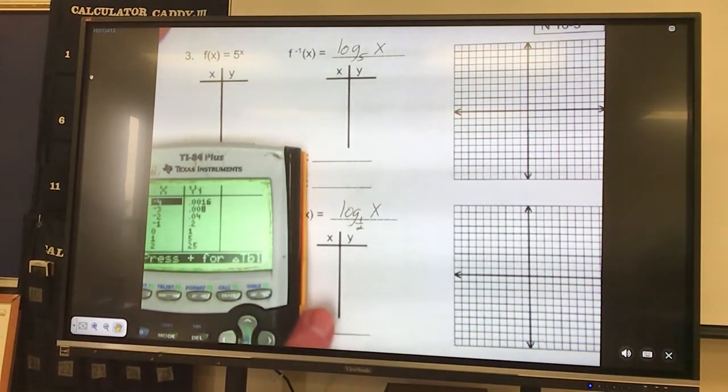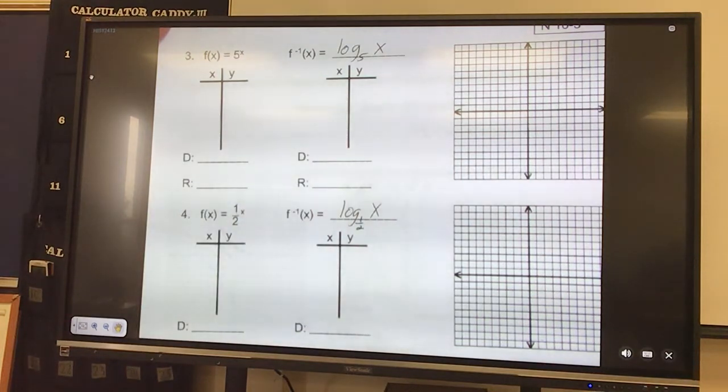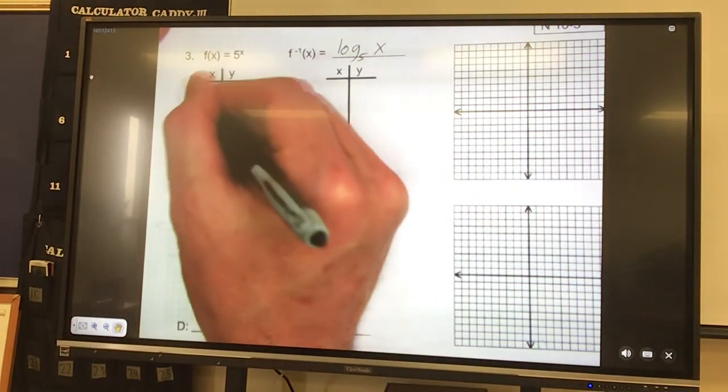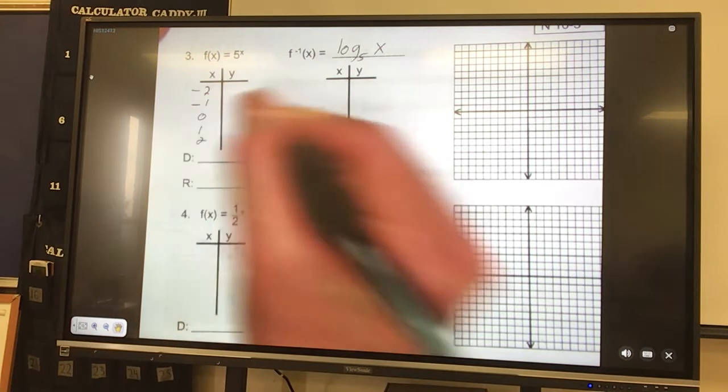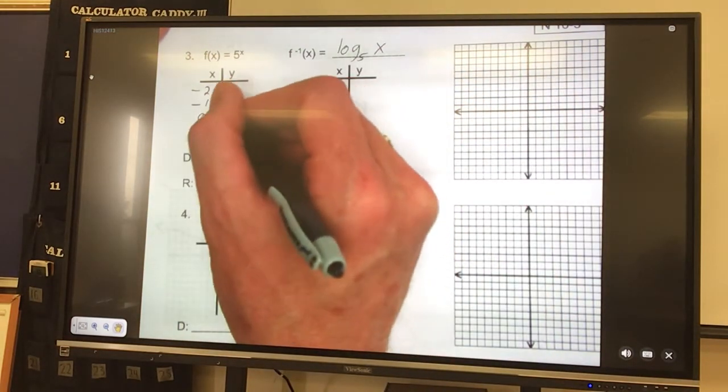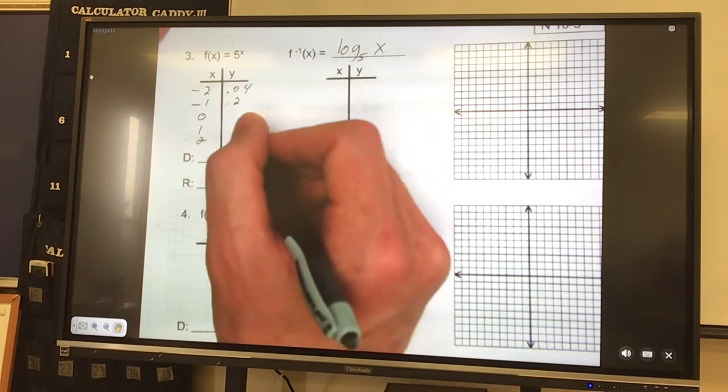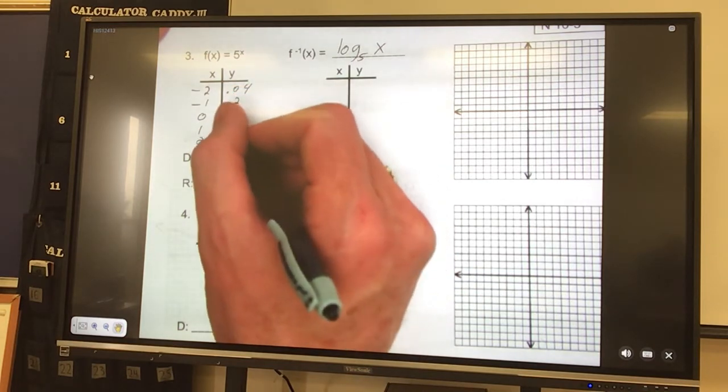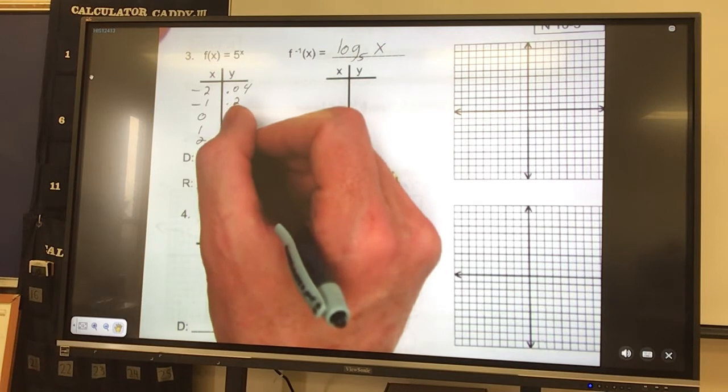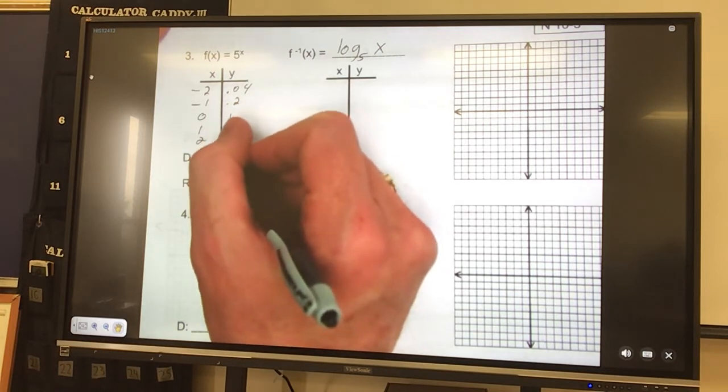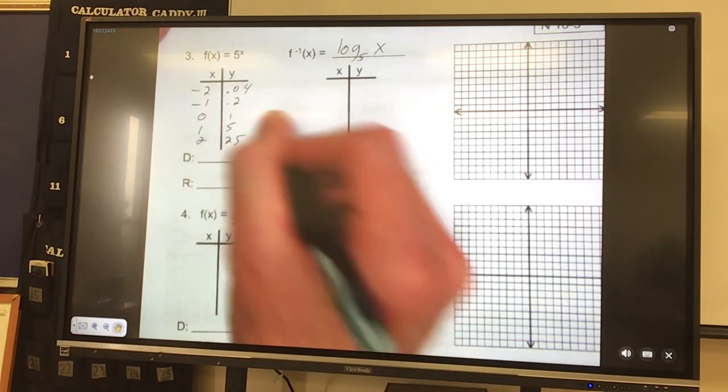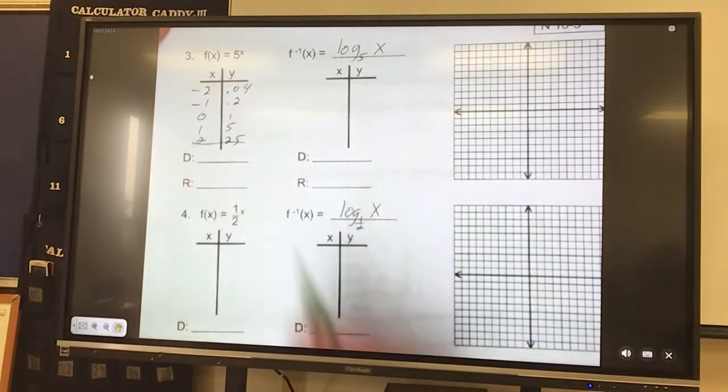So now we're ready to fill in our table. First one, y equals 5 raised to the x power. Let's graph it real quick. Let's just go negative 2, negative 1, 0, 1, 2. All right. So negative 2 is 0.04, negative 1 is 0.2, 0 is 1, 1 is 5, 2 is 25. So I can't actually get that one on my graph, so I don't worry about that one.